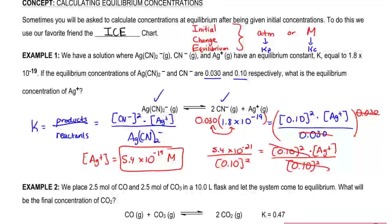So again, why didn't we have to use an ice chart? We didn't have to use an ice chart because we were missing only one value at equilibrium. When you're missing no values or only one variable at equilibrium, you don't need to do an ice chart. We only do an ice chart when more than one concentration is missing at equilibrium.